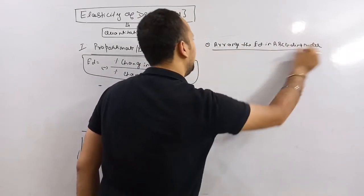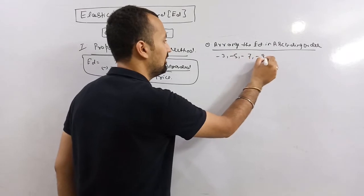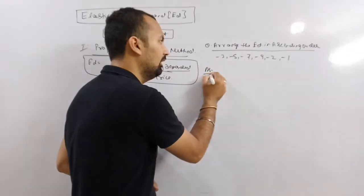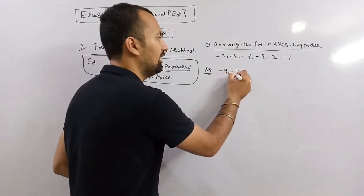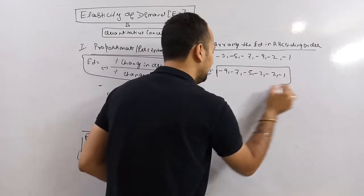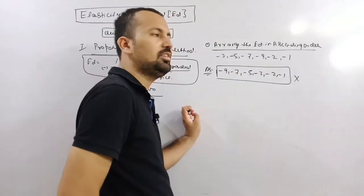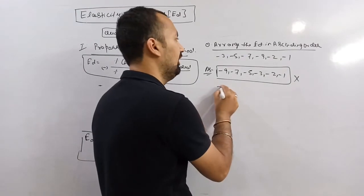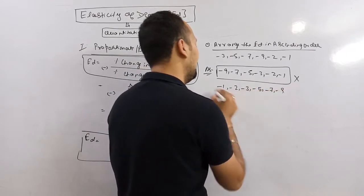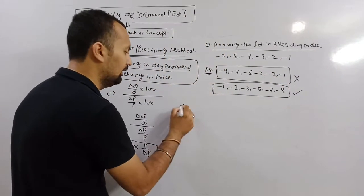The given values are minus 3, minus 5, minus 7, minus 9, minus 2, minus 1. If we ignore the negative signs, the order would be minus 9, minus 7, minus 5, minus 3, minus 2, minus 1. But that is incorrect because the negative sign denotes the inverse relationship between price and quantity. So the correct ascending order is: minus 1, minus 2, minus 3, minus 5, minus 7, minus 9.